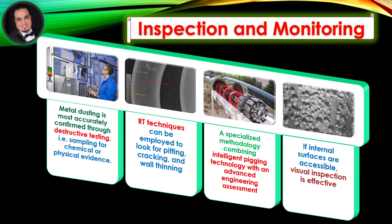Inspection and monitoring: Metal dusting is most accurately confirmed through destructive testing — that is, sampling for chemical or physical evidence. RT techniques can be employed to look for pitting, cracking, and wall thinning. A specialized methodology combining intelligent pigging technology with an advanced engineering assessment can also be used. If internal surfaces are accessible, visual inspection is effective.